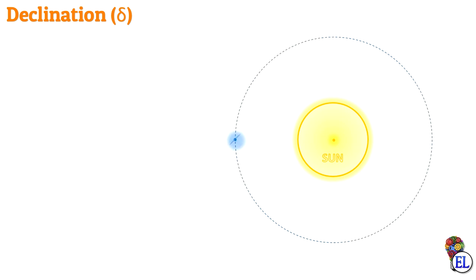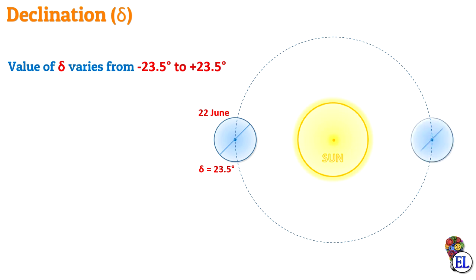The angle of declination varies with the season from a maximum value of plus 23.5 degrees on June 22nd to a minimum value of minus 23.5 degrees on December 22nd.